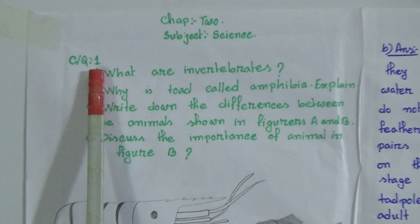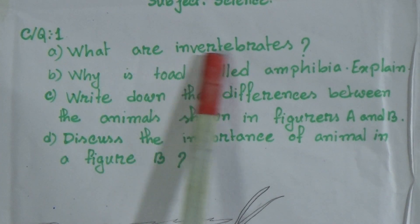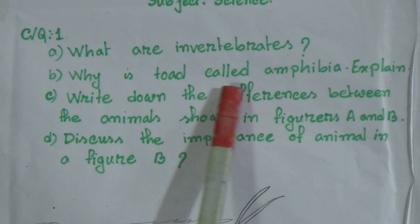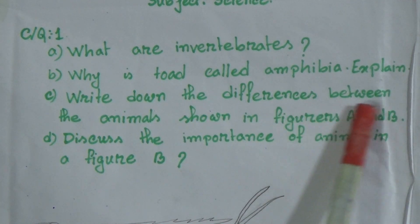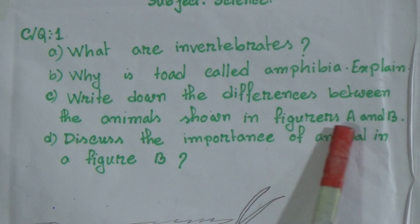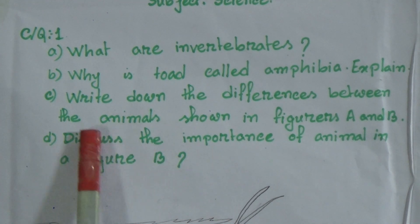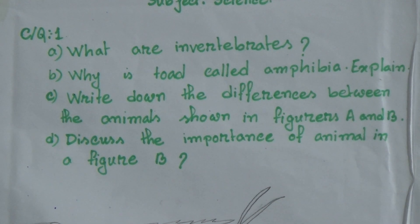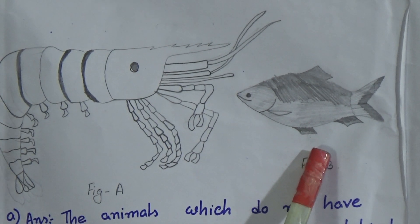Here is Creative Question 1. Part A: What are invertebrates? Part B: Why is toad called amphibia? Explain. Part C: Write down the differences between the animals shown in figure A and figure B. Part D: Discuss the importance of the animal in figure B.